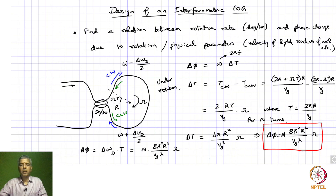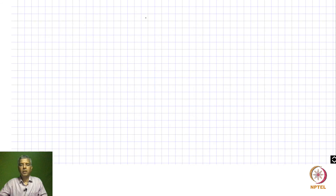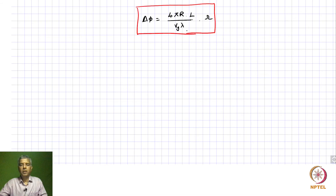We do have a relatively free parameter in N. Rewriting the expression, there is a 2 pi R component corresponding to the circumference of the coil, and N times 2 pi R represents the total length L of fiber in the loop. So we can write delta phi as 4 pi R times L divided by V_G times lambda, multiplied by omega. That is an easier expression to work with.